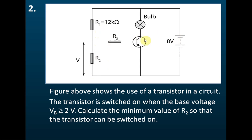We have 8 volts shared by R1 and R2. The question says that when the voltage across R2 equals 2 volts, current in the collector circuit will start to flow, so R2 must have at least 2 volts minimum. If R2 is 2 volts, then the potential difference across R1 must be 6 volts, because these two resistors share the 8 volts as a potential divider.